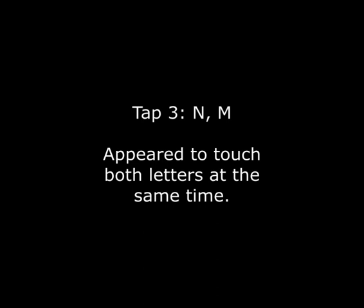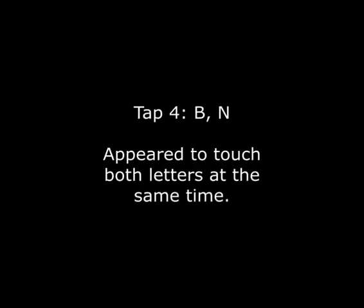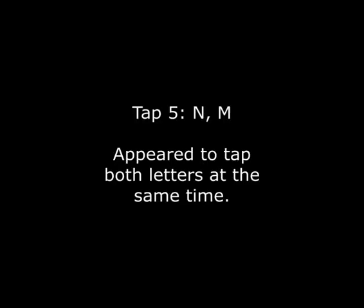Tap three: N, M — appeared to touch both letters at the same time. Tap four: B, N — appeared to touch both letters at the same time. Tap five: N, M — appeared to tap both letters at the same time.